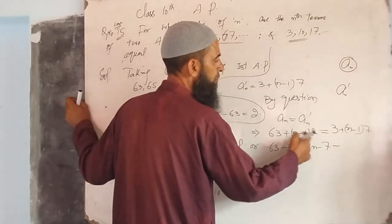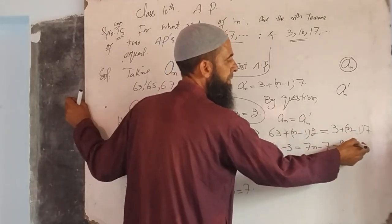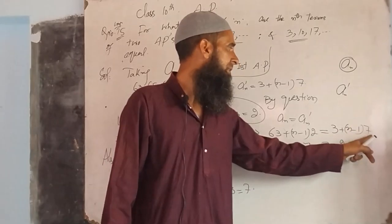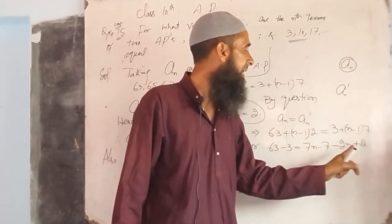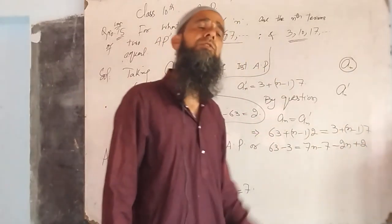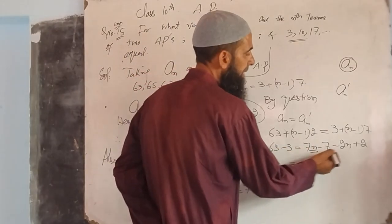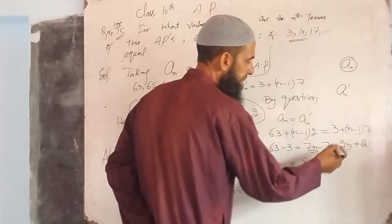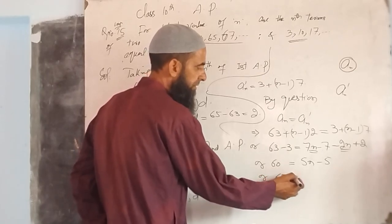On the right side, minus 2 into n that is 2n goes right side becomes minus 2n, and 2 into minus 1 goes right side becomes plus 2. Remember this step. 63 minus 3 becomes 60. It is equal to 7n minus 2n, that is 5n. Minus 7 plus 2 that is minus 5. So 65 is equal to 5n. Therefore n is equal to 65 divided by 5, that is n = 13.